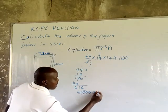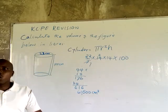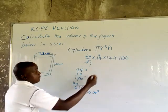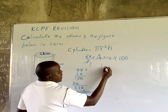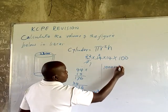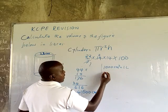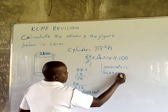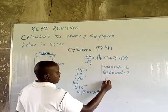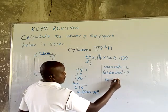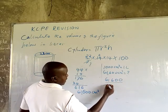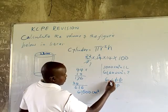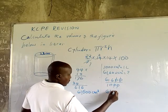This gives 61,600 centimeters cubed. Now, to convert the volume from centimeters cubed to liters: 1,000 centimeters cubed equals 1 liter. So 61,600 centimeters cubed divided by 1,000 gives us 61.6 liters.